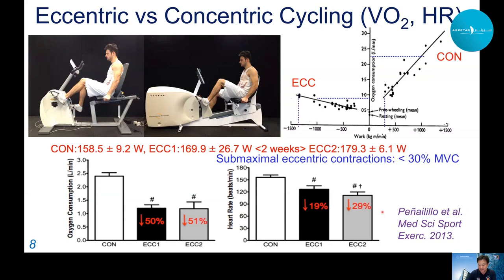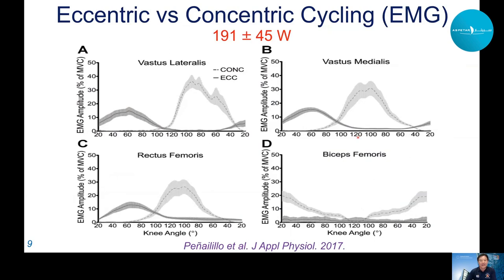Eccentric cycling is less metabolically demanding than concentric cycling for the same workload. This is due to less muscle activity during eccentric cycling. For the same work, much less muscle activity was observed in vastus lateralis, vastus medialis, rectus femoris, and biceps femoris compared to concentric cycling. We recruit fewer motor units and fewer muscle fibers during eccentric cycling.